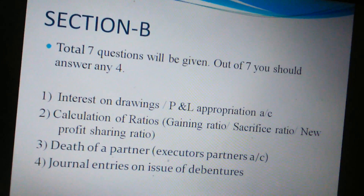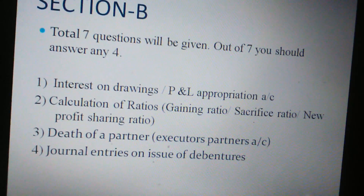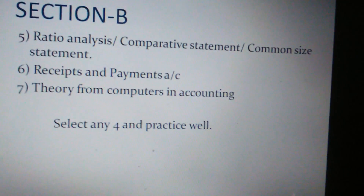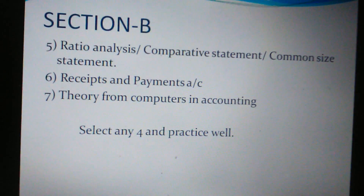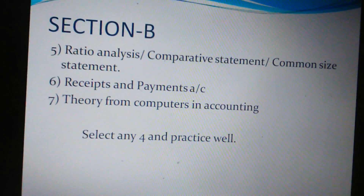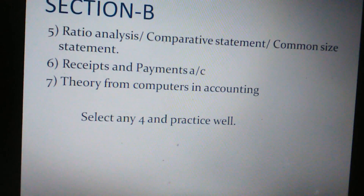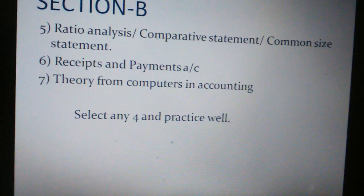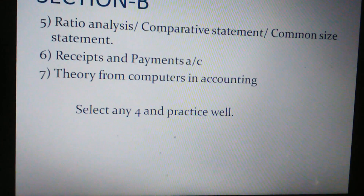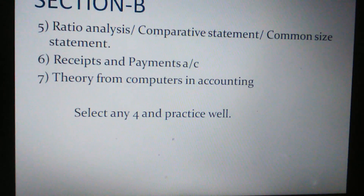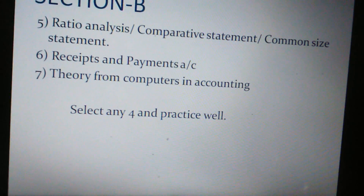Next is journal entries on issue of debentures — five entries will be given. Then ratio analysis, comparative statement, or common size statement — any one of these three will be given. Next is receipts and payments account, which you have to prepare. Finally, there is theory from the computer chapters, which is Chapter 10.